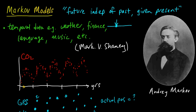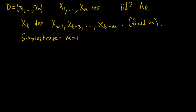In the last video we started talking about Markov models as a way to model temporal data, using the fact that in the real world the future is independent of the past given the present. In this video we're going to see how this idea is formulated mathematically in the simplest type of Markov model, what's called a discrete time Markov chain.